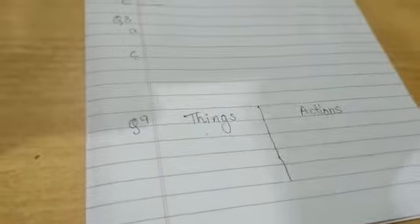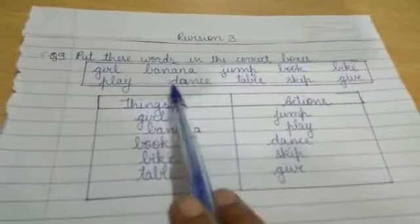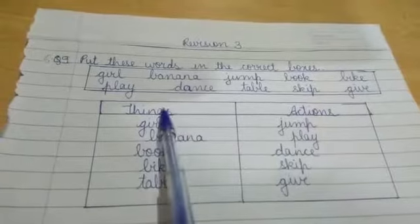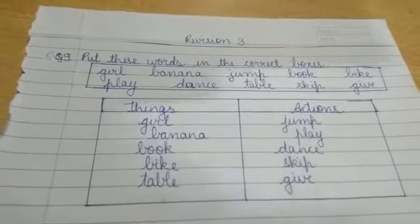This is all about the paper pattern. Now we are going to see revision 3. See here, like this, question number 9. Like this box will be given. You have to write things and action and put under the correct heading.